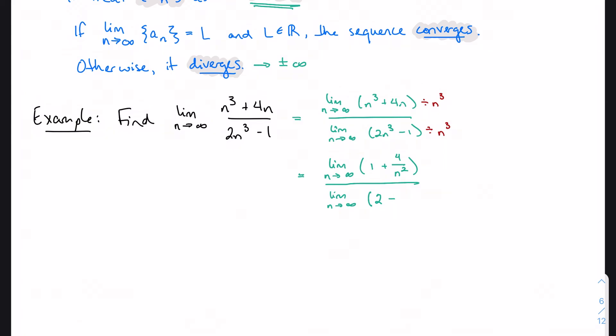Like 2 minus 1/n³. And again, the limit of a constant is just going to be that number. So this is just 1. 4/n² is going to work a lot like 1/x did. So this is just going to approach 0. As n² gets bigger and bigger, the whole thing is just going to get smaller and smaller and closer to 0.